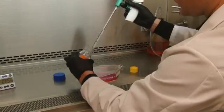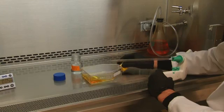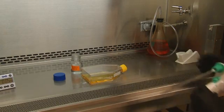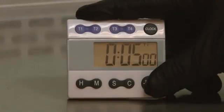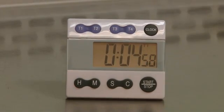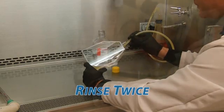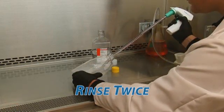To quench the cross-linking reaction, we next add enough glycine to the flask to reach a concentration of 125 millimolar or 1x if you have a 10x solution. Incubate for 5 minutes at room temperature. Remove all medium and rinse twice with ice-cold PBS.